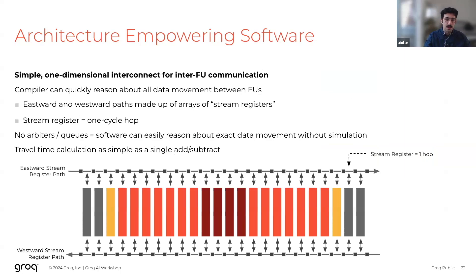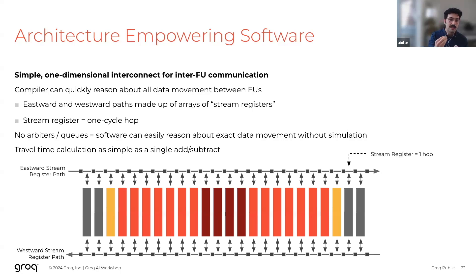We'd like the functional units to communicate efficiently in a way that still empowers our compiler. The LPU architecture employs a very simple one-dimensional interconnect for efficient data passing between functional units. This interconnect is made up of two communication paths — one going eastward and one going westward — each consisting of an array of stream registers. The simplicity of this interconnect allows the compiler to very quickly reason about all data movement. There are no arbiters or queues within the interconnect, allowing software to reason about data movement without expensive hardware simulation. For example, the compiler can determine travel time between two functional units with a simple add or subtract based on their relative positions on the physical chip layout.